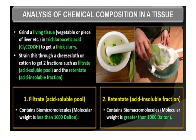In other words, isolation and purification of the compound is done. Analytical techniques, when applied to the compound, give us an idea of the molecular formula and the probable structure of the compound. All carbon compounds that we get from living tissue can be called biomolecules. Living organisms also have inorganic elements and compounds in them. The acid-soluble pool contains biomicromolecules with molecular weight less than 1000 Dalton, while the acid-insoluble fraction contains biomacromolecules with molecular weight greater than 1000 Dalton.